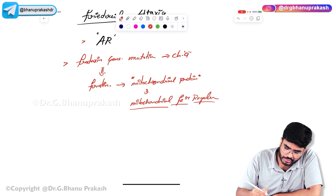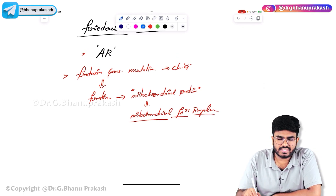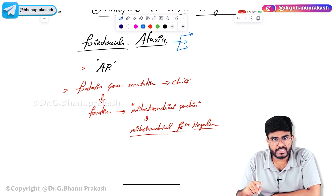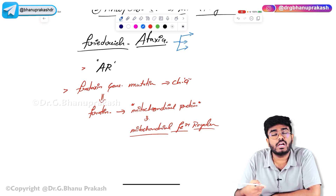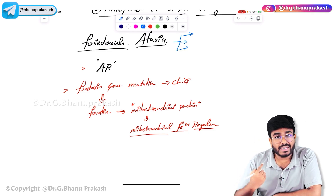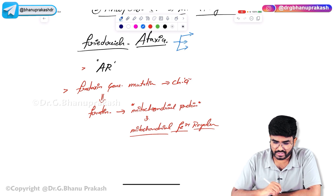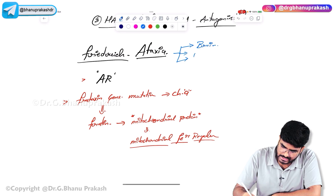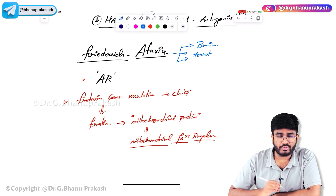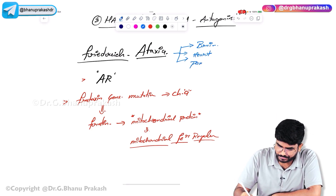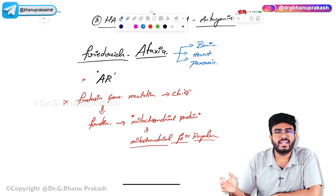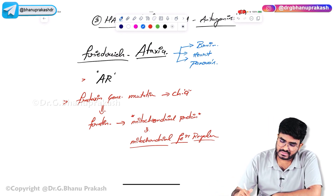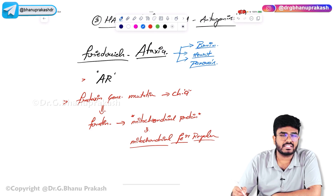When the Frataxin gene is mutated, the Frataxin protein does not function properly, causing iron to accumulate inside the mitochondria. Since mitochondria are present in multiple systems, multiple organ systems are affected. The three main systems involved are the brain, the heart — where hypertrophic cardiomyopathy occurs — and the pancreas, where iron damages the pancreatic islets causing diabetes mellitus.